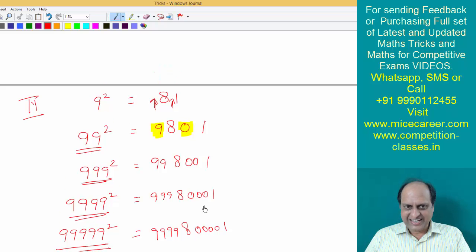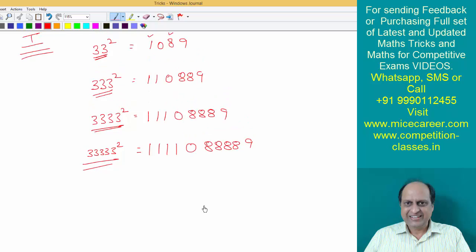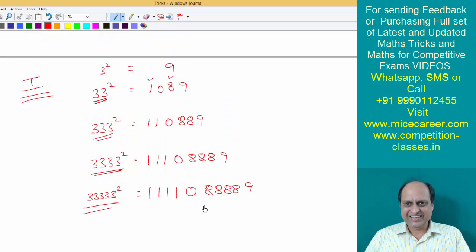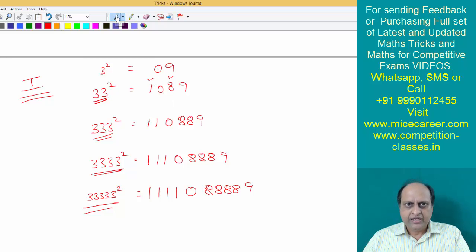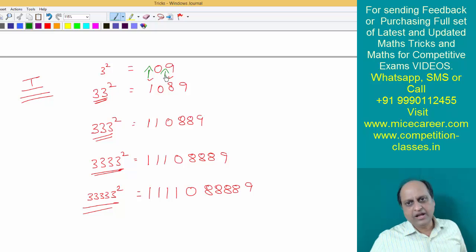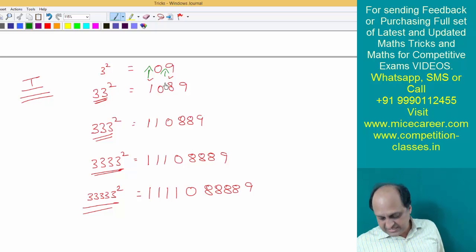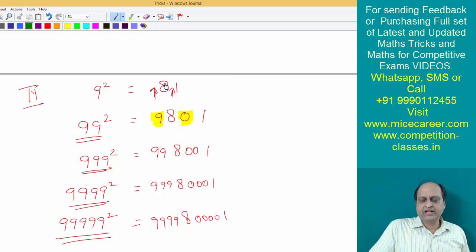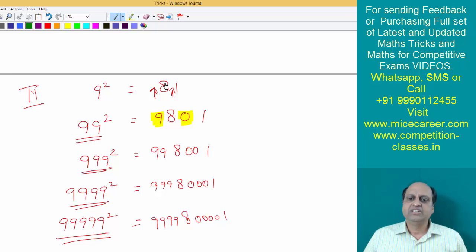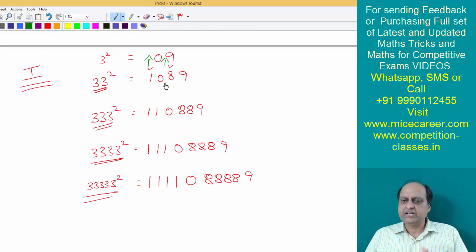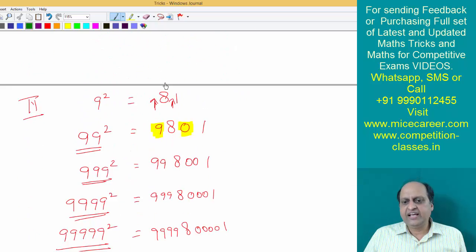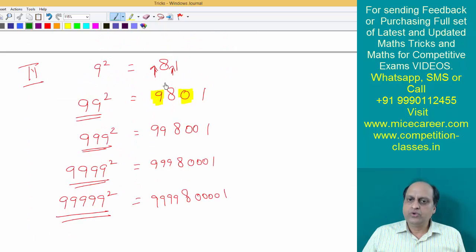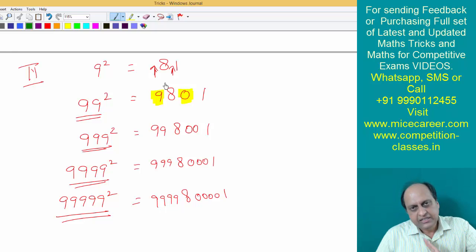This was the second technique. Notice the similarity between the two concepts. In the first technique you insert '1' and '8' — their total is nine. In the second technique you insert '9' and '0' — their total is also nine. So both follow the same underlying concept.